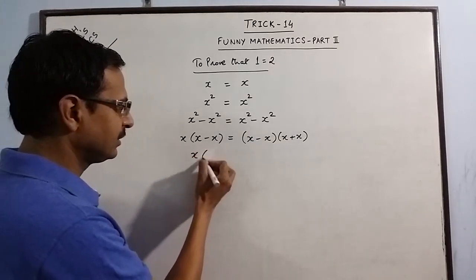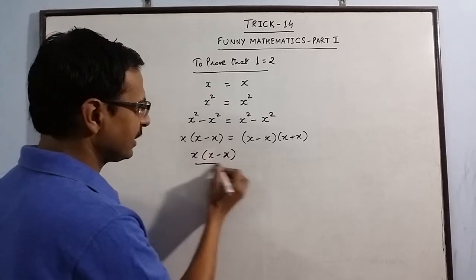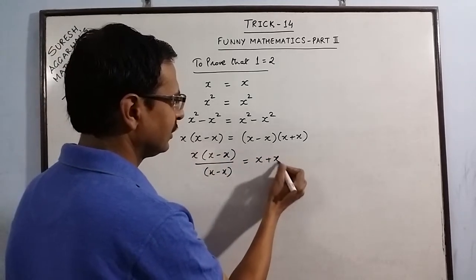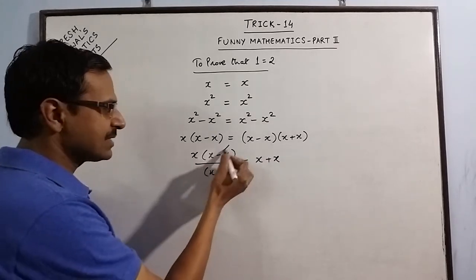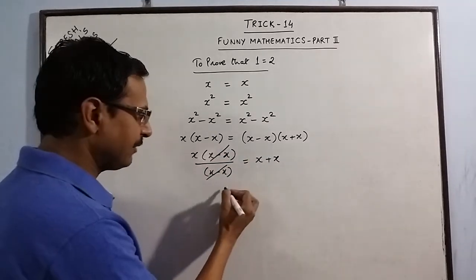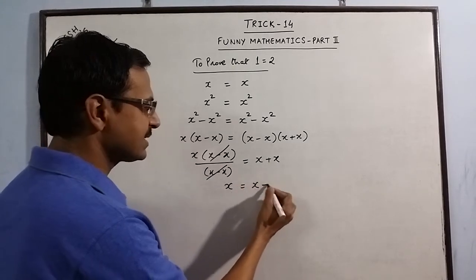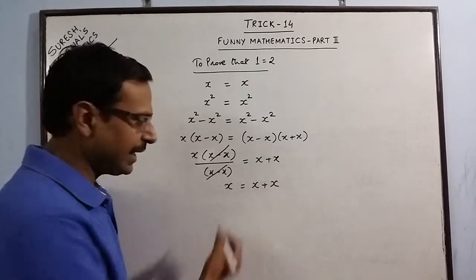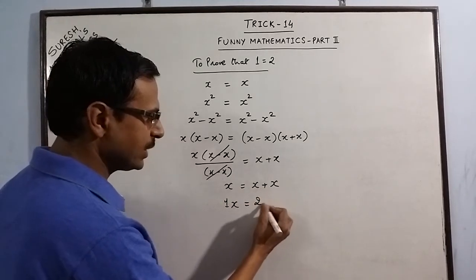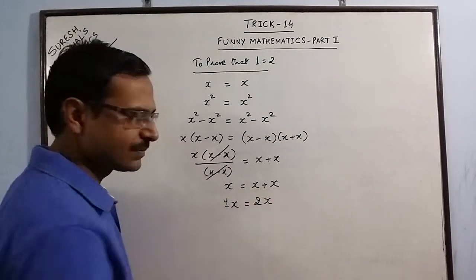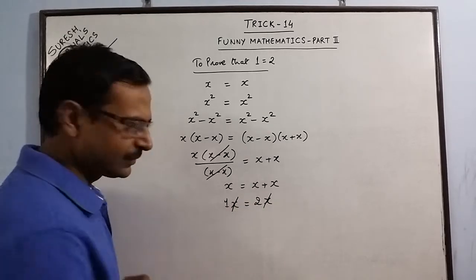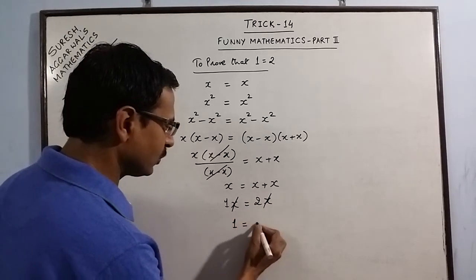Since these are two factors, I bring one factor to the denominator — the common factor cancels out, and I am left with x = x + x. Now x means 1x, and x + x is 2x, so the common factor x cancels out and we are left with 1 = 2.